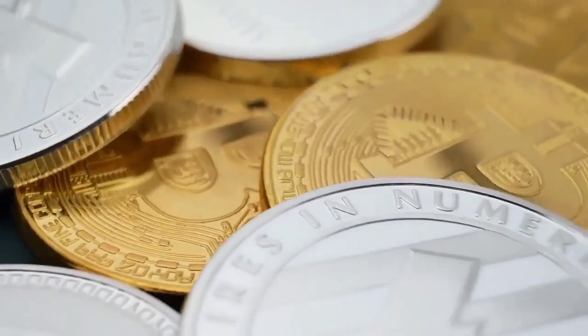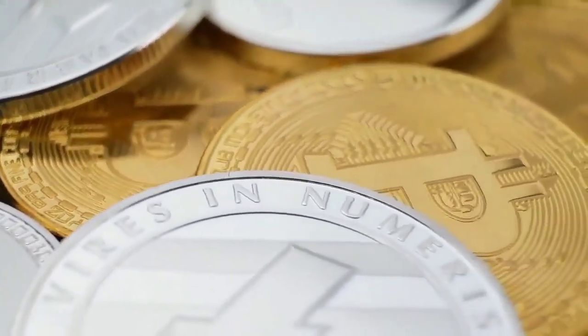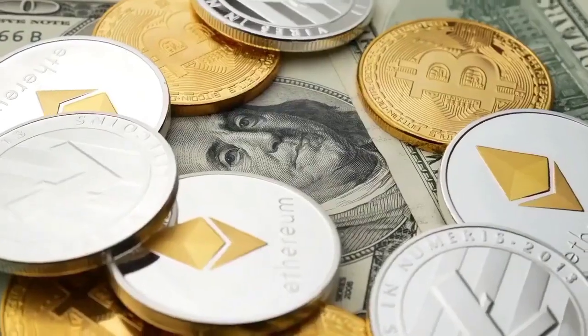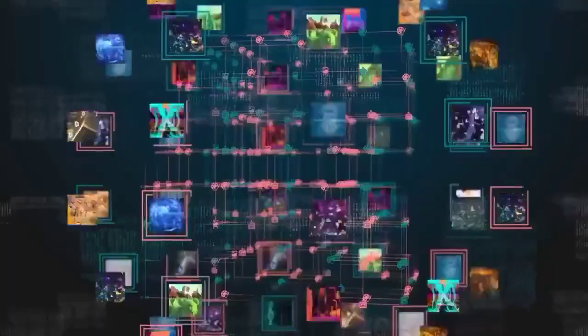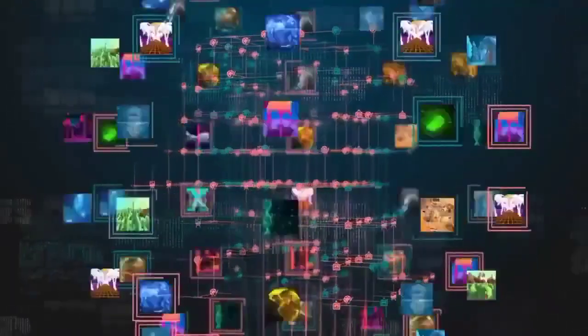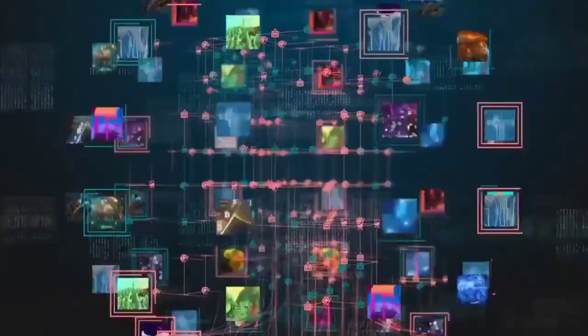One Bitcoin can be exchanged for another Bitcoin because they have the same value. Physical currencies work this way too. One dollar bill is the same as another dollar bill. But each NFT is unique. There isn't another one exactly like it out there.